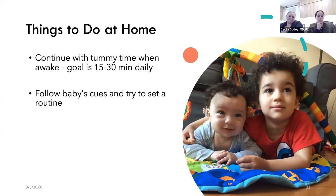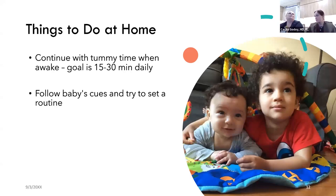From the beginning, try to set a routine even if it's not strict. Babies aren't robots and you need to follow their cues, but look at wake windows and avoid stretching them too long into overtiredness. Around two months, babies start sleeping more at night. In the beginning, the day/night cycle is often reversed when babies come home from the hospital.